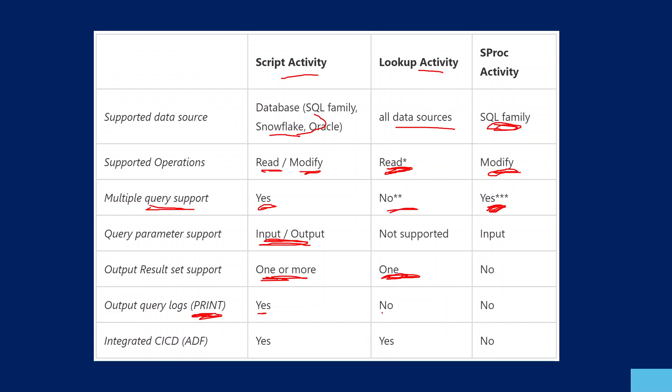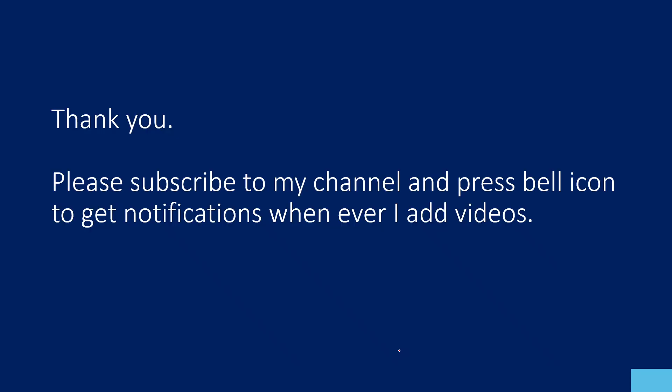Multiple query support is effectively not available in Lookup Activity. Query logs — if you use a PRINT statement with a user-defined message, you can log it to the activity output or to a log file using Script Activity. That is not available in Lookup Activity or Stored Procedure Activity. CI/CD integration is also possible with Script Activity. With this video I hope you got a clear idea of how Script Activity behaves, how to use it for multiple queries, how multiple results appear, and how to log messages to the activity output or storage account. Thank you for watching — please subscribe and press the bell icon!